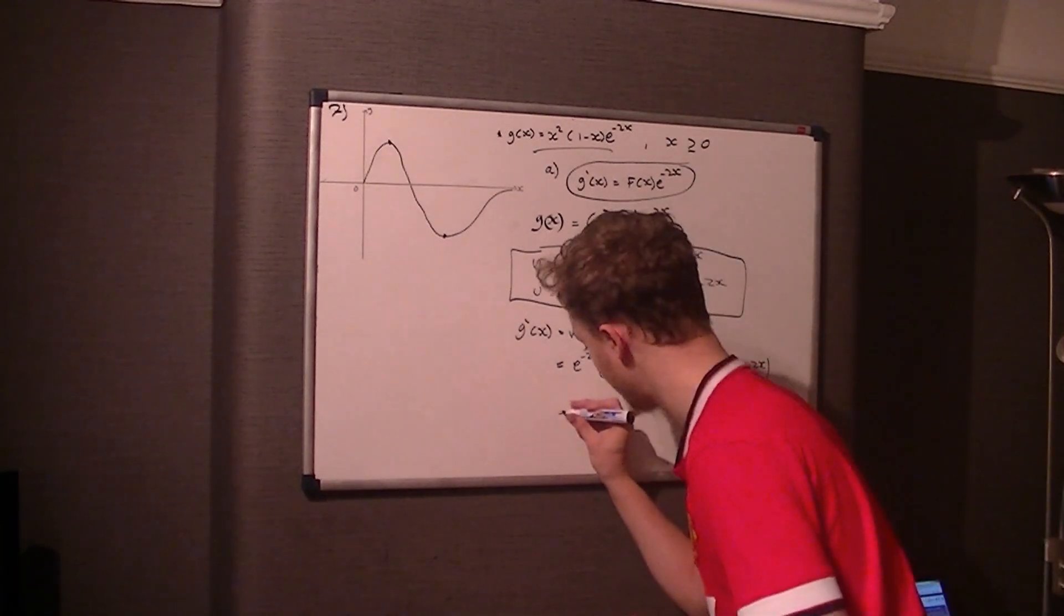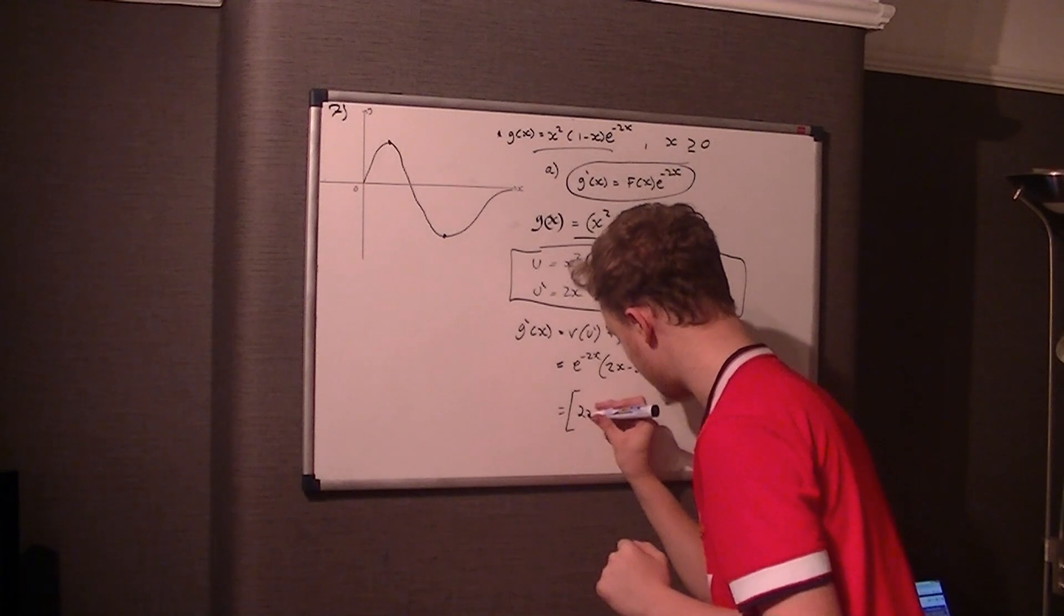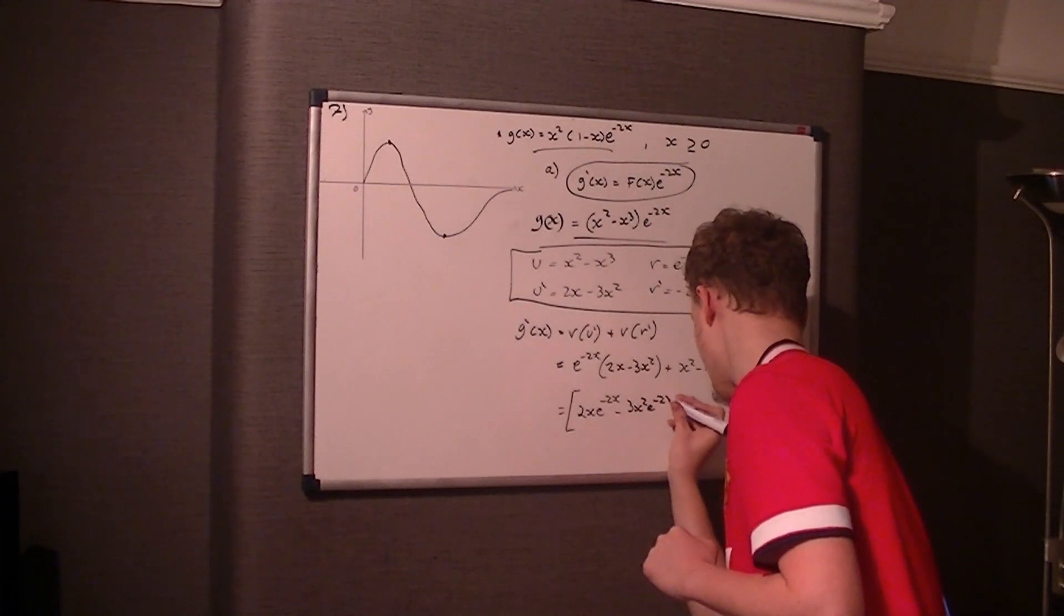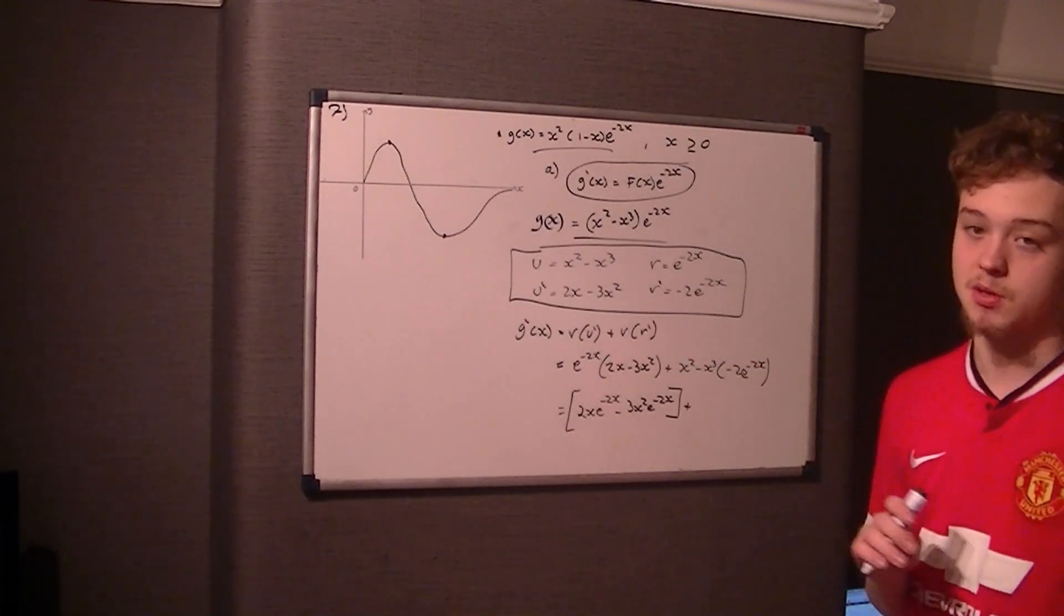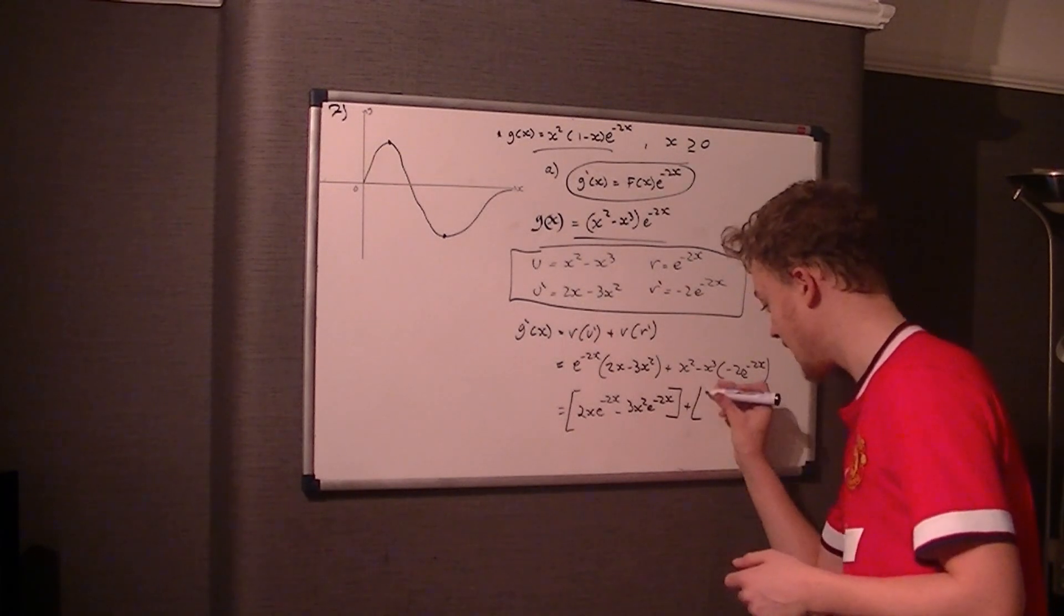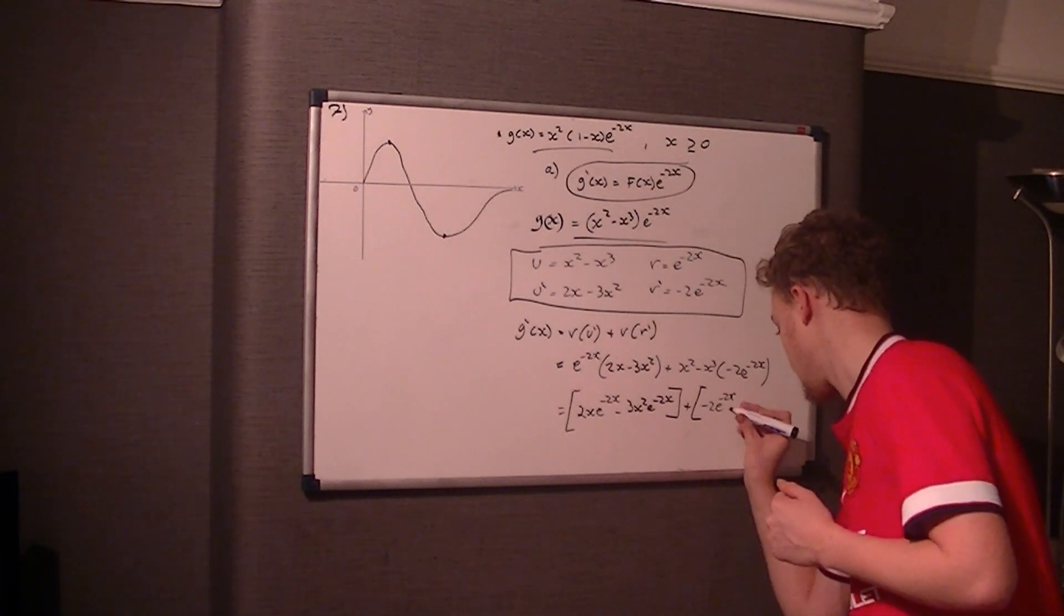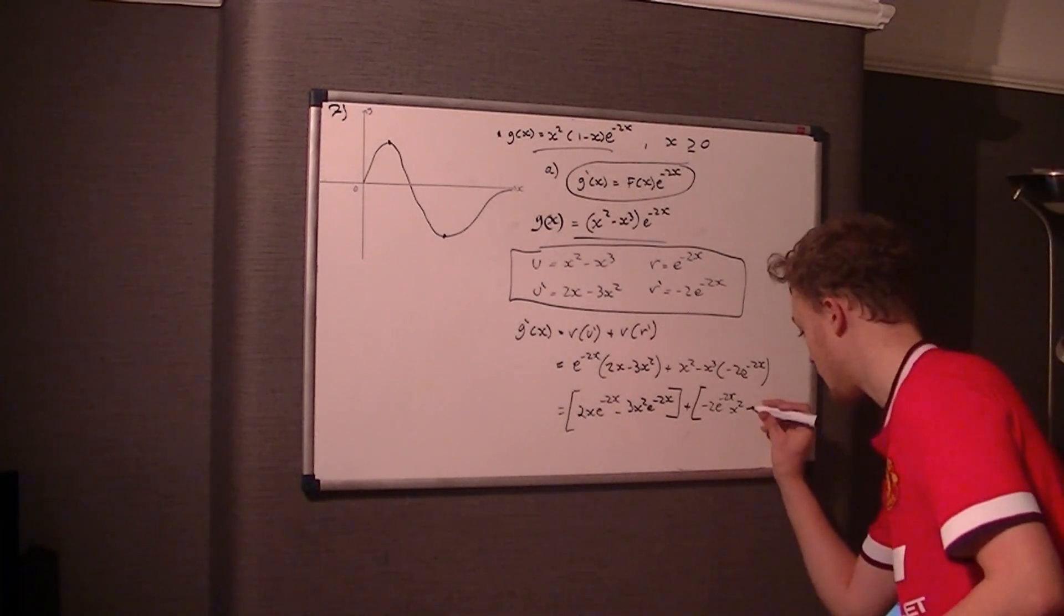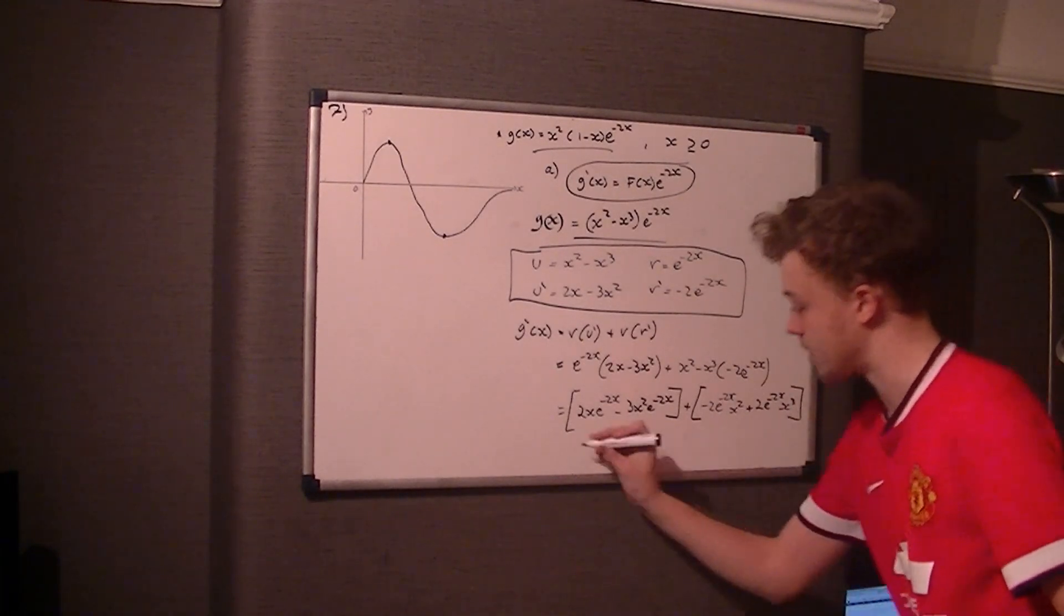Then I would expand this individually. So e to the negative 2x times 2x is 2x e to the negative 2x, and take 3x squared e to the negative 2x. Plus, I leave it in the same form so it's the function and then e to the negative 2x. That's added to x squared times negative 2 e to the negative 2x, so it's negative 2x squared e to the negative 2x. Then it's negative x cubed times negative 2 e to the negative 2x, so you add on 2x cubed e to the negative 2x.